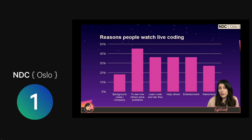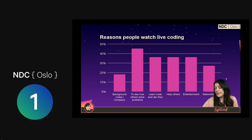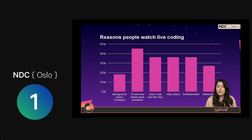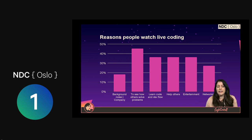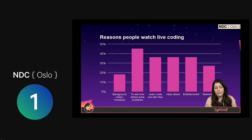Another point that comes up most frequently is they want to see how other developers solve problems, and I think this is a real big hint — this is where we learn. We learn through watching, seeing how other people approach those complicated things, how they architect systems, how they start doing all of this stuff. So that's a good draw. You can learn about code and dev flow, how other people deploy their applications, how they approach problems.